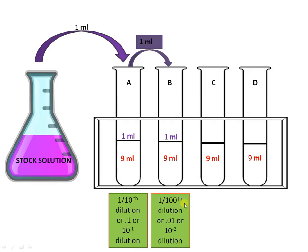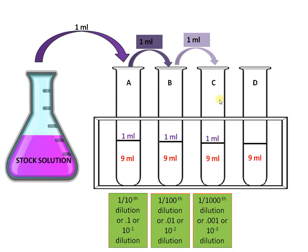The procedure is repeated in the case of test tube C. Mix well and transfer 1 ml of solution from test tube B to C, so that we are getting 1 by 1000 dilution or 10 raised to minus 3 dilution.